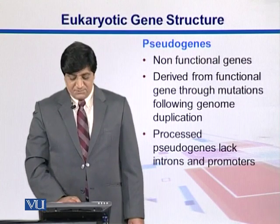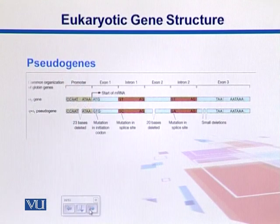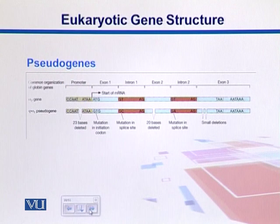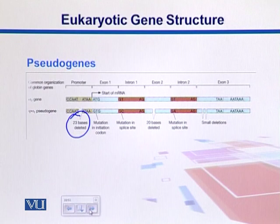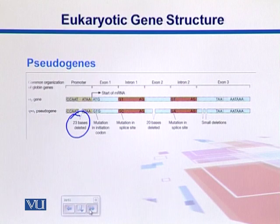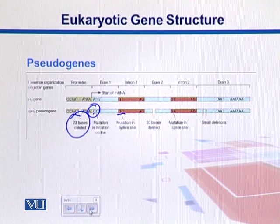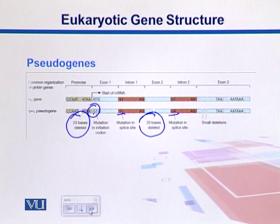There is one category called processed pseudogenes — they lack introns and promoters as well. In this diagram, from a normal gene a pseudogene is formed. At the 5' end, 23 bases have been deleted, including bases from the promoter region and the initiation codon — these deletions are lethal. In the start codon, rather than ATG it is GTG. There are also mutations in the splice sites, where rather than GT it is GC. Additionally, in exon 2 there are another 20 bases deleted. In this way, a normal gene has become a pseudogene.